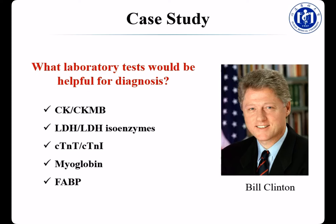To summarize: for early diagnosis of AMI, choose myoglobin and FABP. For definitive diagnosis, choose troponin T, troponin I, and CKMB. For late diagnosis, choose troponin T, troponin I, and LDH.